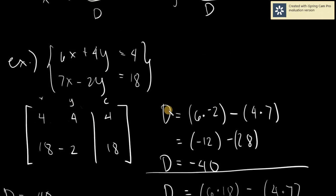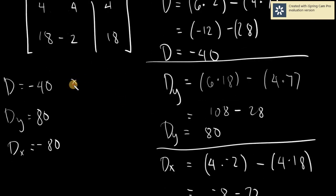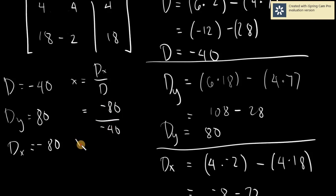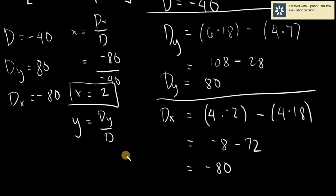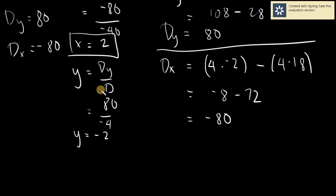The last thing we need to do is compute x and y. To get x, you partner D sub x with D: that is negative 80 divided by negative 40, giving x equals positive 2. For y, we take D sub y over D: 80 divided by negative 40, giving y equals negative 2. You now have your values for x and y.